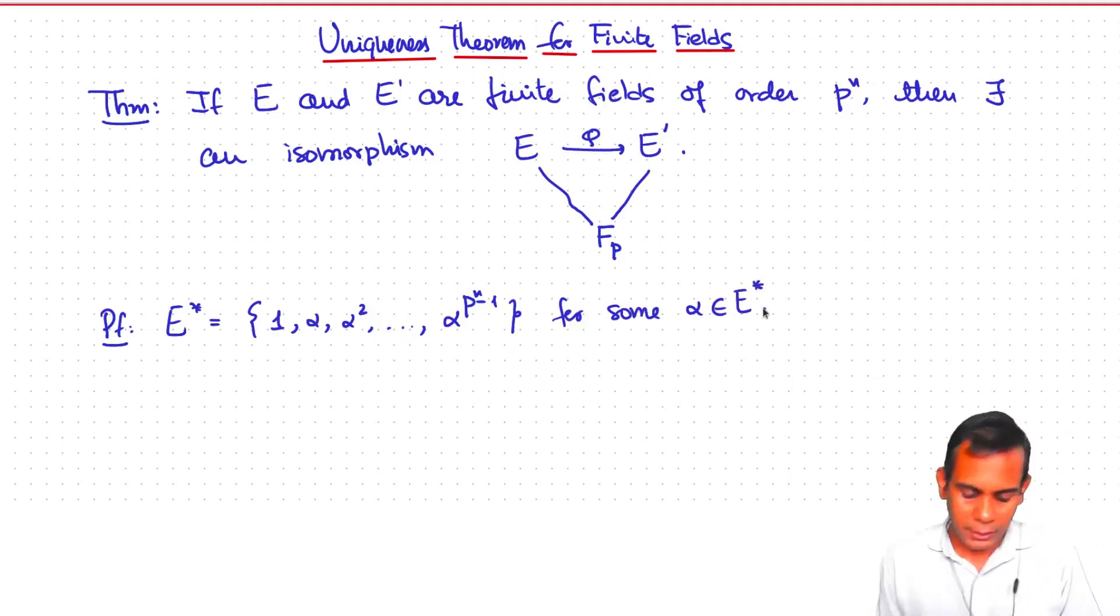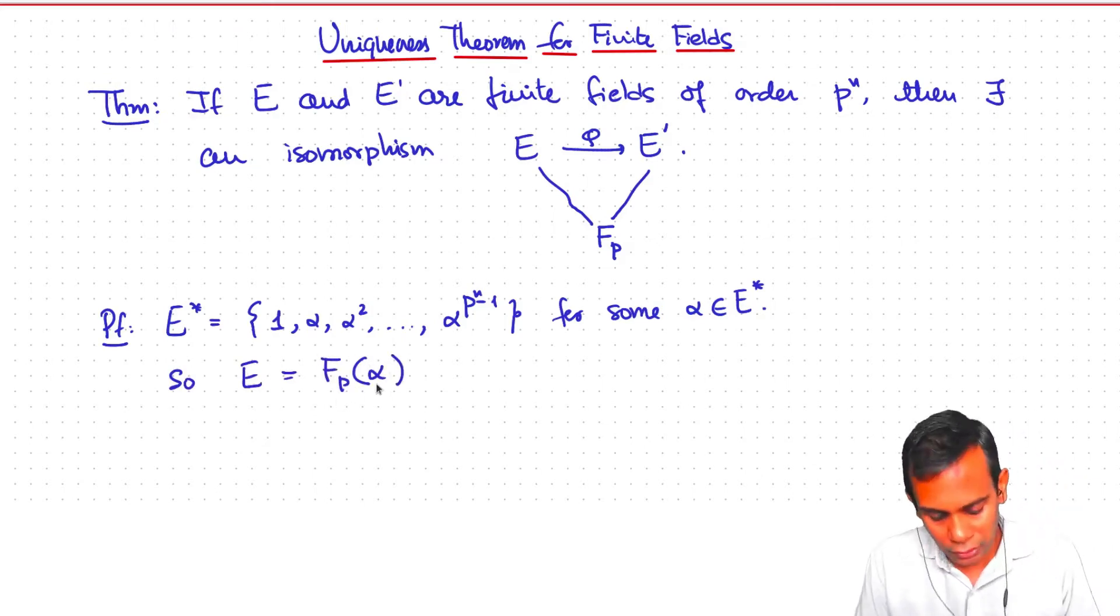Okay, some non-zero element alpha generates this group. And what this means is that E is the group generated by alpha, the field extension of Fp generated by alpha. That is, the smallest field containing Fp and alpha is all of E.